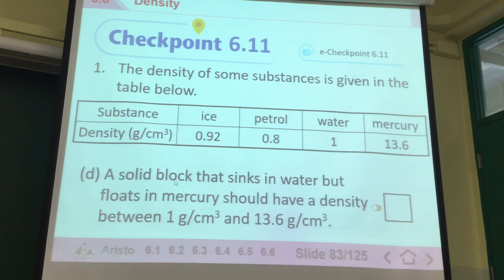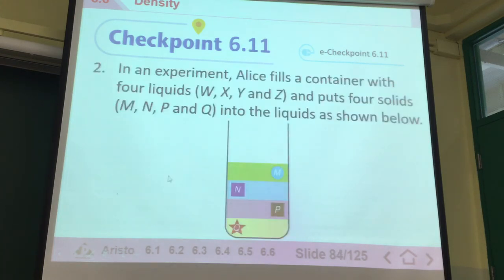We've got a solid rock that sinks in water but floats on mercury. It should have a density between 1 and 13.6. 1 is water, and 13.6 is mercury. So it sinks in water and then floats on mercury. So its density should be between those two numbers. If it is true, it will happen like that. So as long as the density is between 1 and 13.6, it will fall between these two numbers. If you sink in water and float on mercury.